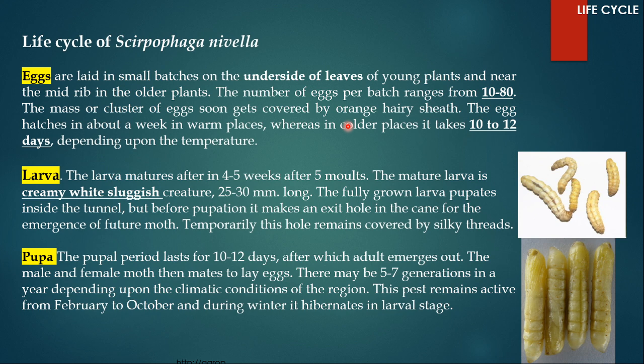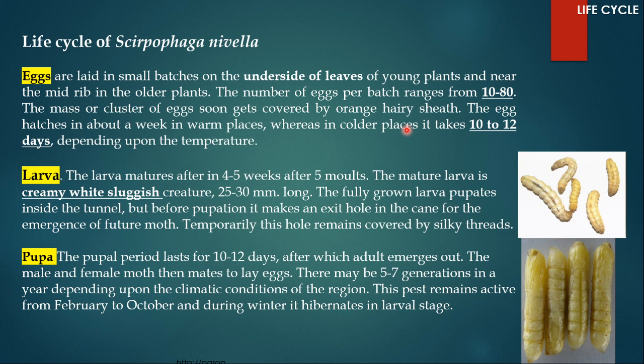For any insect's life cycle, if the weather is warmer it takes a shorter time to complete the life cycle, and if the weather is colder it takes longer. Exactly the same applies here — warmer weather means shorter hatching time and colder weather means the eggs take longer to hatch. The larva matures after four to five weeks, going through five molts. The mature larva is a creamy white, sluggish creature about 25 to 30 millimeters long.